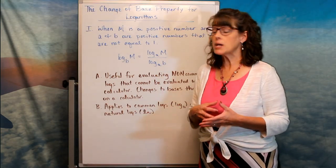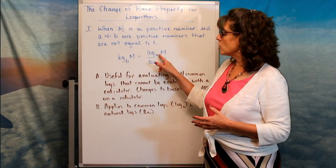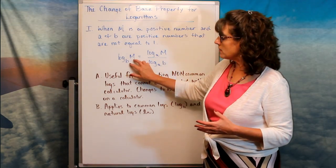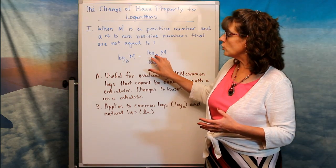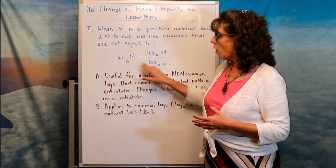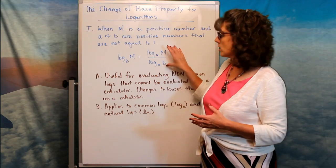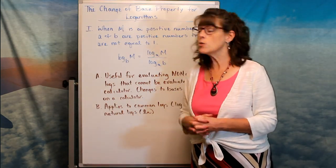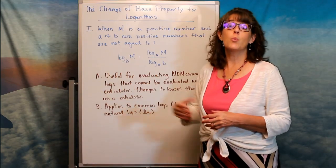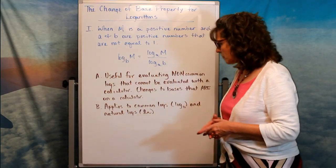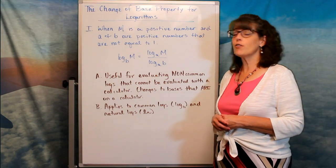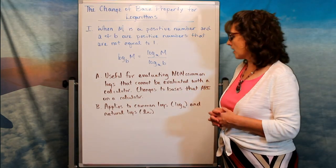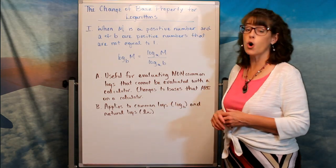In order to change the base, you change it to either a 10 or an e, separate the expression, putting the new log of the argument on the numerator and the new log of the old base on the denominator. You divide those two numbers, and that allows you to evaluate the logarithm. It's useful for evaluating non-common logarithms that can't be evaluated on the calculator — it changes the bases to ones that are on the calculator, applying to both common logs and natural logs.